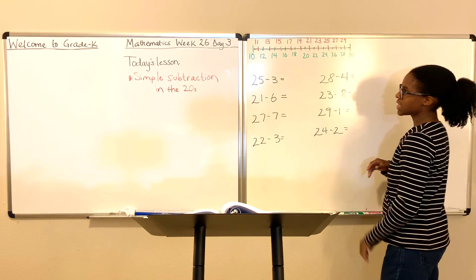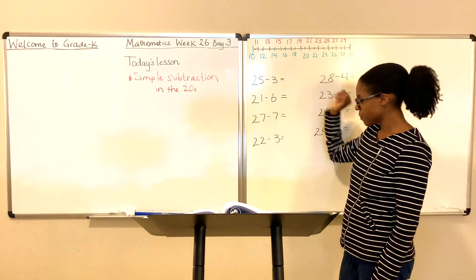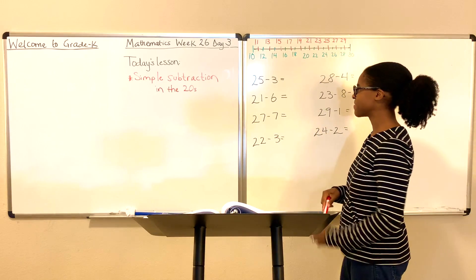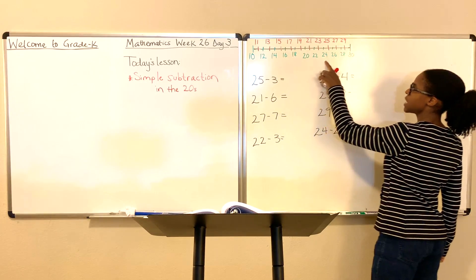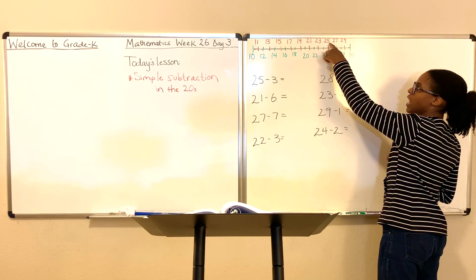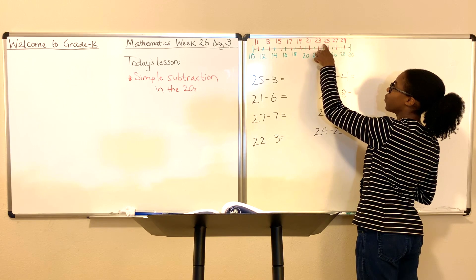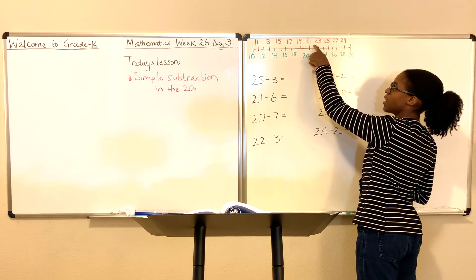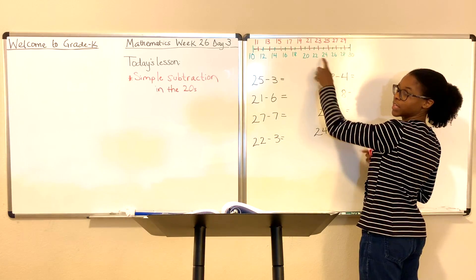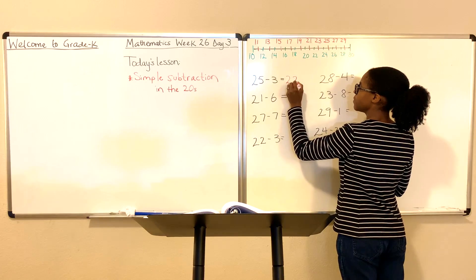We have our number line at the top, much like the one you see in your own workbook. Let's start with 25 minus 3. We go to the number line, find the number 25, and then count backwards by three: one, two, three. What number does the line land on? It lands on 22. Therefore, 25 minus 3 is 22.